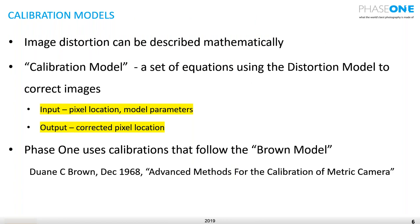So what is the calibration model? Image distortion can be described mathematically. If we take the mathematical representation of the distortion, we can subtract it from, or add it to, the measured location — and with this, calibrate the actual location on the sensor. The calibration model is a set of equations that use the distortion model to correct the image. The input is pixel location — row and column — plus model parameters, and the output is the corrected pixel location.